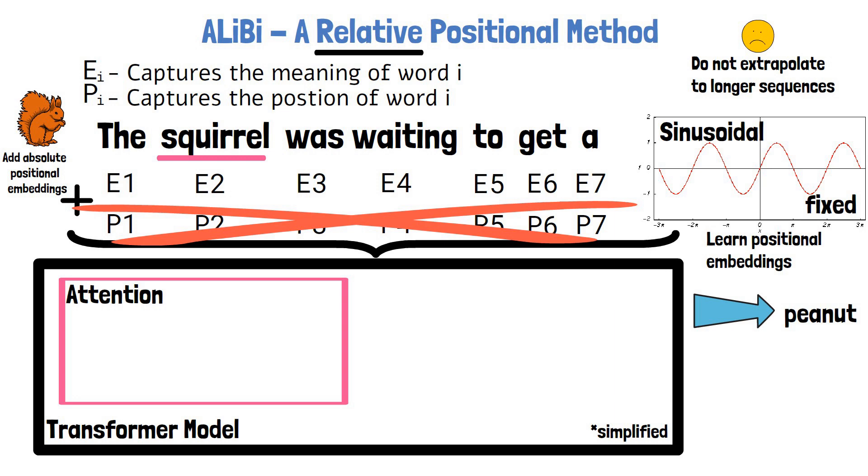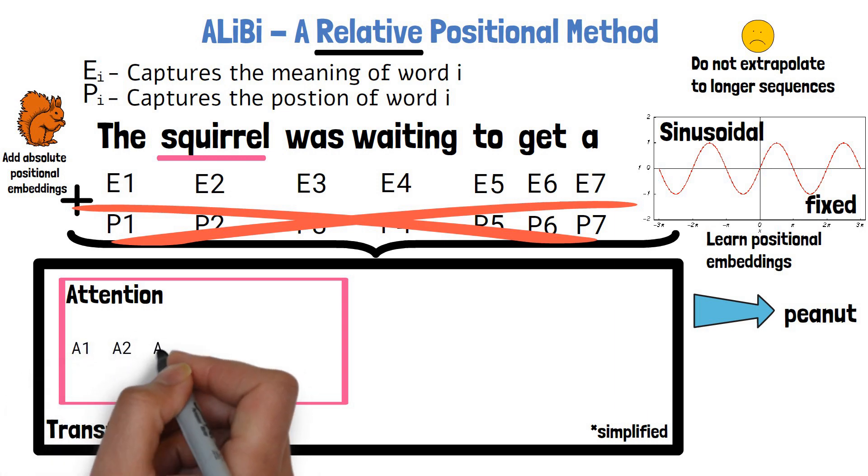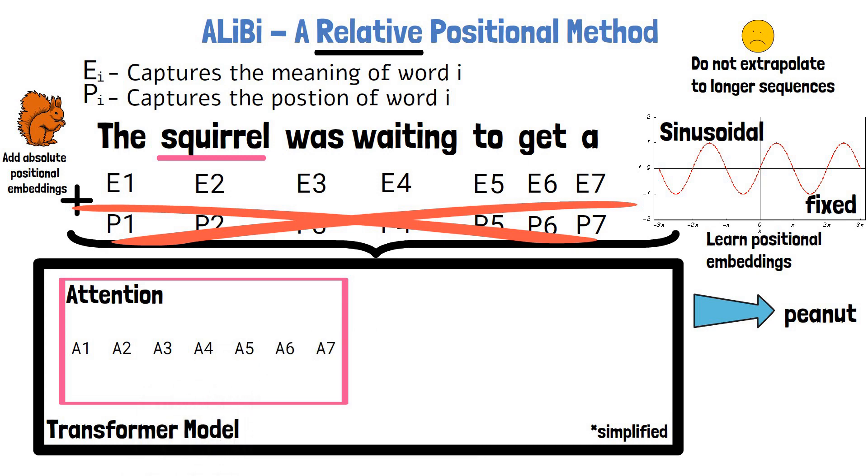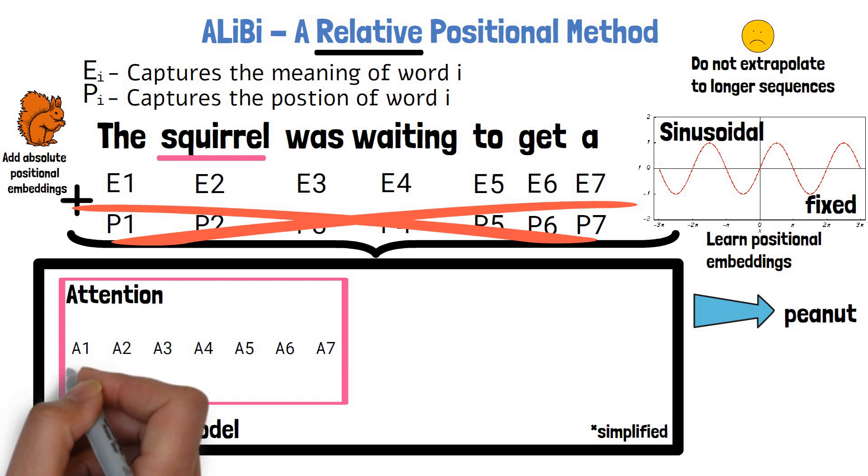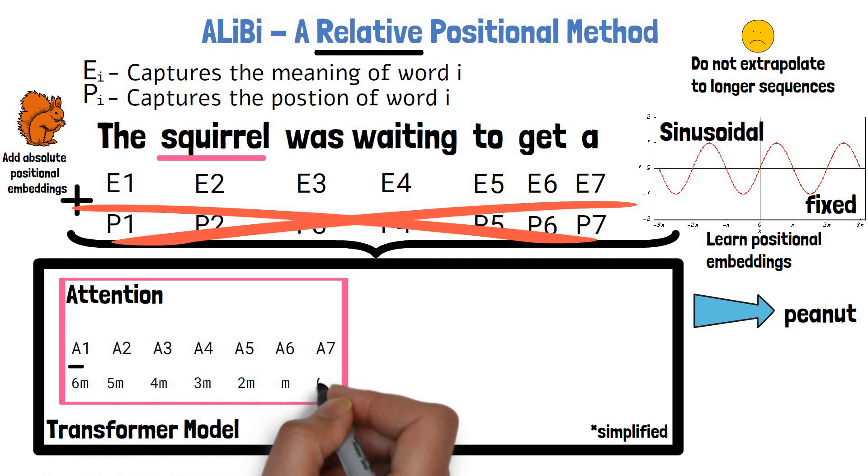The attention helps the model to pay more or less attention to certain parts in the sequence that will help the model yield a good prediction for the next word. As part of the attention calculation, each word gets sort of an attention score. In our example input sequence we have 7 words, so A1 to A7 here represent the score for each word. ALiBi idea is to subtract a relative value from that score by a factor of a parameter m, which has a value between 0 to 1. This way the score is reduced more and more for words that are farther away from the end of the sequence.